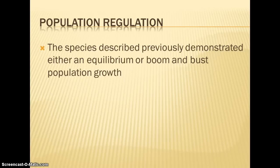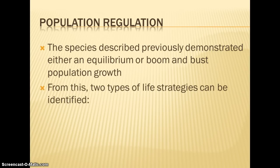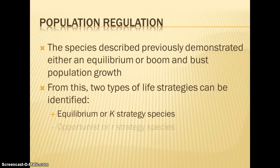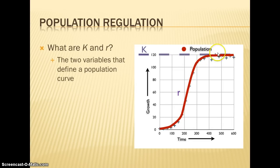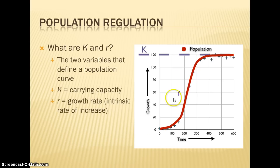The falcons represent equilibrium species, while locusts and mosquitoes represent boom and bust — two different types of population growth, giving us two types of life strategies. The equilibrium or K-strategy species are those that have reached equilibrium around their carrying capacity — K stands for carrying capacity. Then we have opportunist or R-strategy species — R stands for intrinsic rate of growth, representing how a species would grow with unlimited resources. K species are right around carrying capacity, while R species are still growing exponentially at their intrinsic rate of increase.